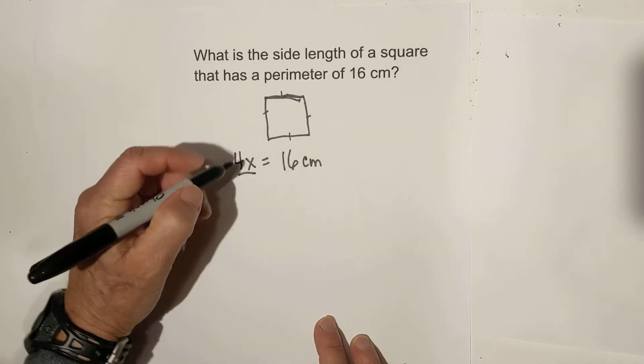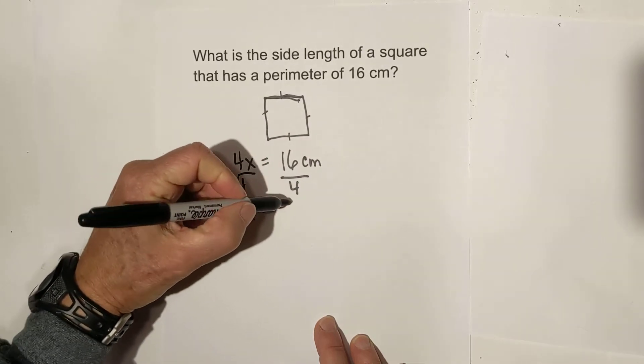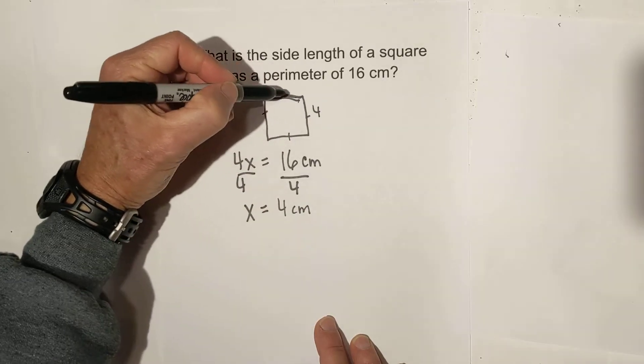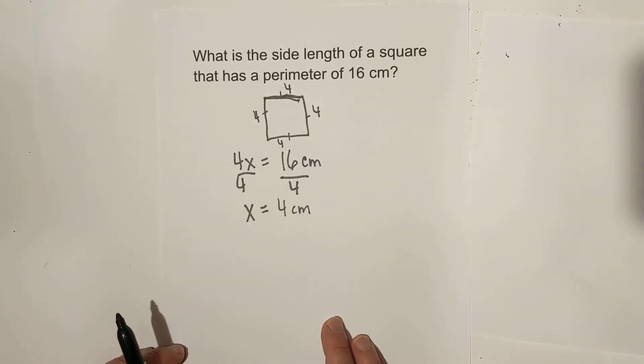Then, all we do is get x by itself by dividing by 4, so x is equal to 4 cm. This is 4, 4, 4, and 4, and that adds up to 16.